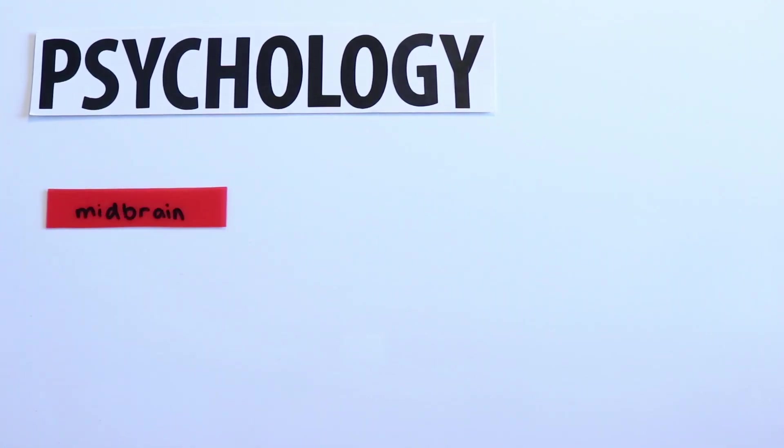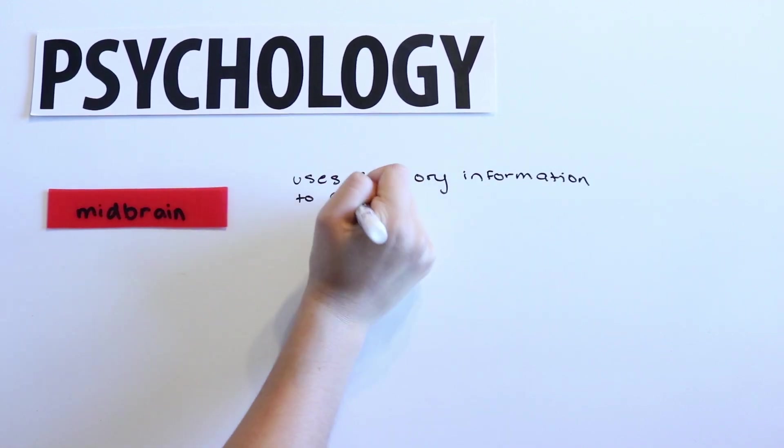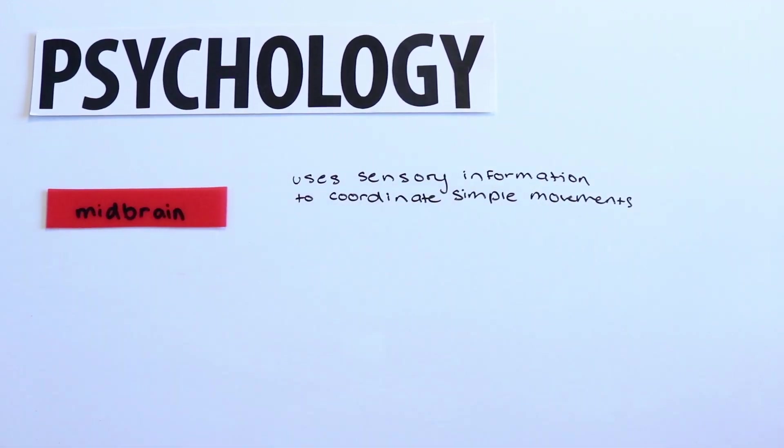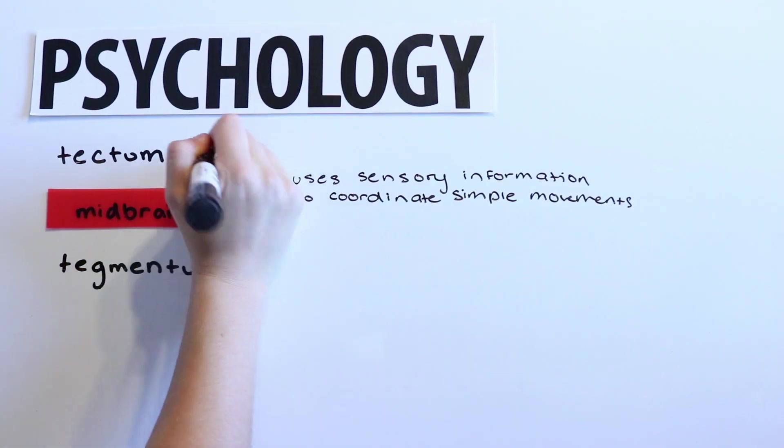The midbrain follows, sitting just above the spinal cord and just below the forebrain, and primarily functions using sensory information to coordinate simple movements. Its major components are the tectum and tegmentum, the brain's roof and floor.